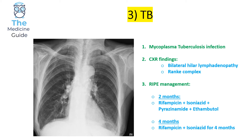The management of TB is a very high-yield exam question. The mnemonic I use is RIPE. For the first two months patients need to receive Rifampicin, Isoniazid, Pyrazinamide, and Ethambutol. Then for the remaining four months they just need Rifampicin and Isoniazid. So for the first two months all four drugs from RIPE are used, and then for the next four months just the first two — Rifampicin and Isoniazid.